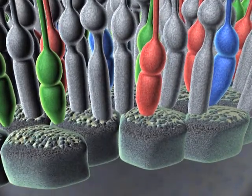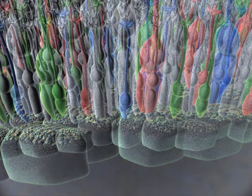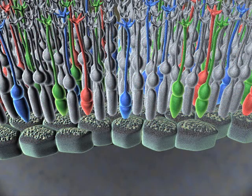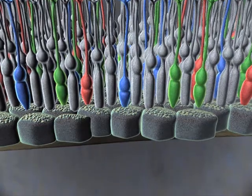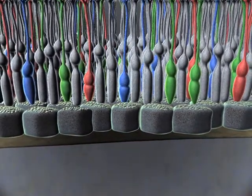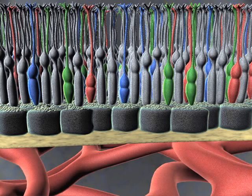Behind the photoreceptors is a layer of epithelial cells, the retinal pigment epithelium, or RPE. These cells are rich in pigments that absorb light, so that it does not scatter within the eye. The RPE nourishes the photoreceptors and processes waste products from them, transporting these across Bruch's membrane to the choroid.